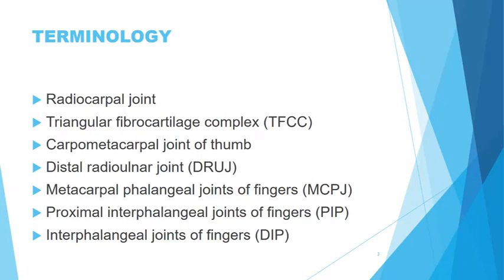The carpometacarpal joint of the thumb is where your carpal bone meets your first metacarpal. What condition do we very often see in our older population, especially females? It's osteoarthritis at that CMC joint. When you palpate it, it will be painful, and there's also a grinding test where you push the metacarpal down and it will flare up.